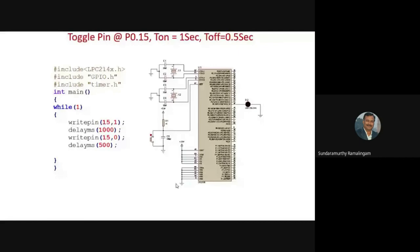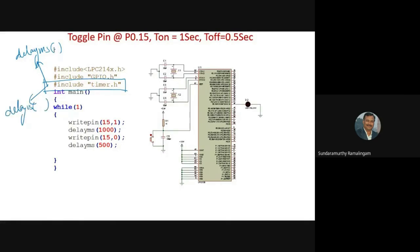Some example problems. You create a timer.h file containing two functions: delay_millisecond and delay_microsecond, both taking an unsigned integer parameter. Problem 1: Toggle P0.15 with an on-period of 1 second and off-period of 0.5 seconds.